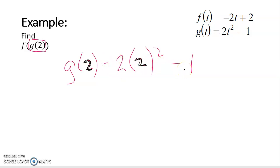So g of 2 equals negative 9. Well that's not so bad, but here's the cool thing, I can now really do the substitution. It says I want g of 2.